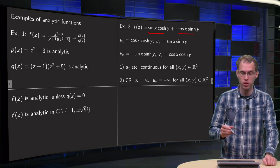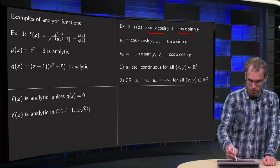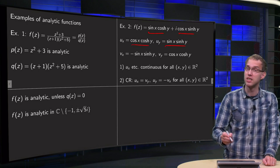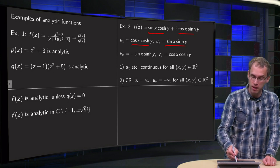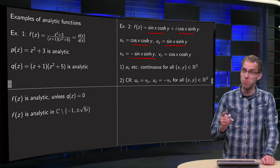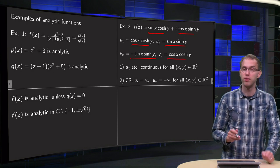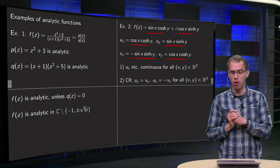ux equals the cosine of x times the cosine hyperbolic of y, uy equals the sine of x times the sine hyperbolic of y, vx equals minus the sine of x times the sine hyperbolic of y, and vy equals cosine x times the cosine hyperbolic of y.